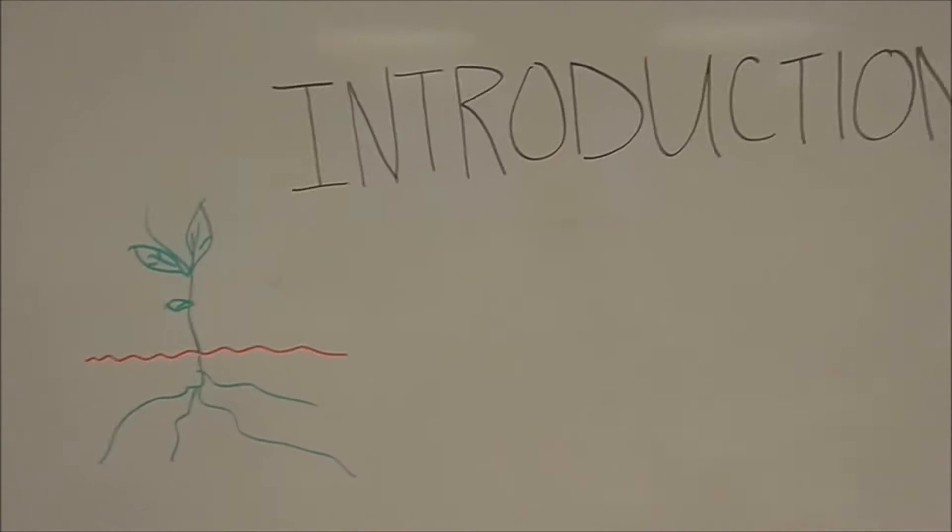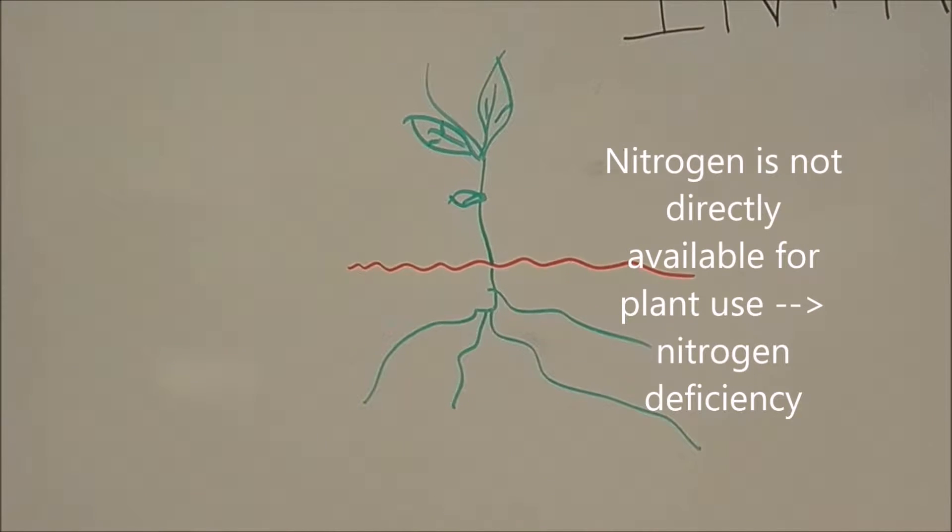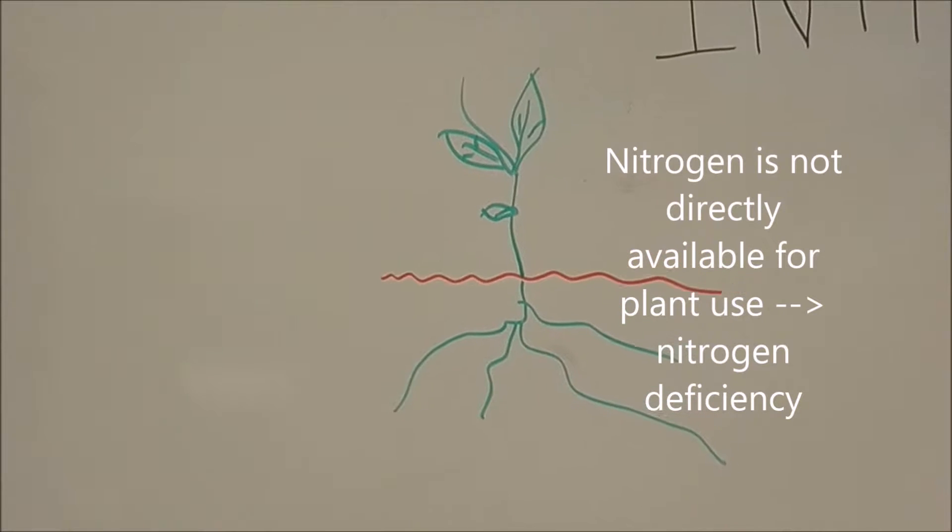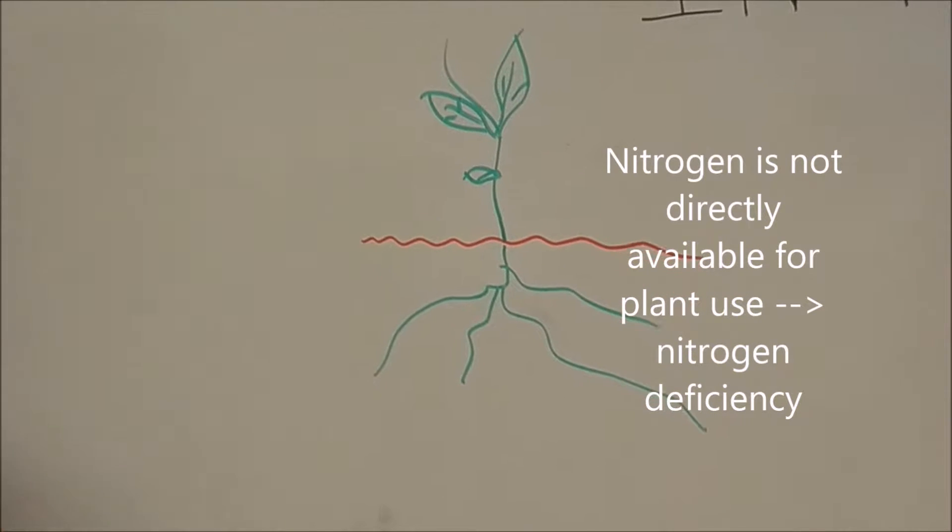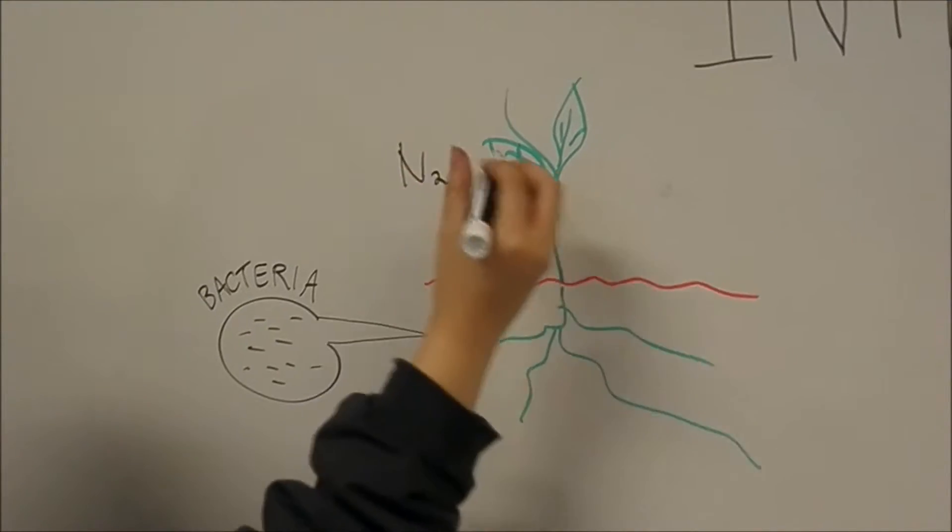Nitrogen is an essential nutrient for plant growth, development, and reproduction. Even though it's one of the most abundant elements on Earth, nitrogen deficiency is probably the most common nutritional problem affecting plants worldwide, because the nitrogen gas from the atmosphere is not directly available for plants to use.